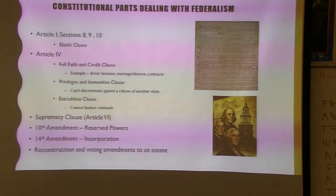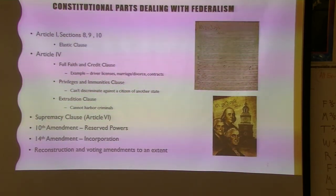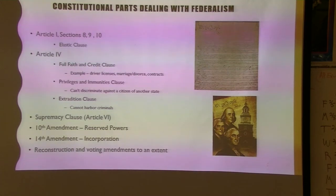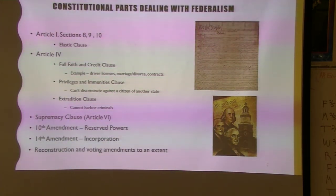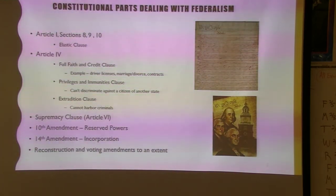The Privileges and Immunities Clause: you cannot discriminate against a person from another state. If a crime is done to you in one state, they can't say 'you're from Arizona, we're not going to pursue this.' Or if you're pulled over for a speeding ticket, they can't charge $180 for someone from Florida but $280 for someone from Georgia — it's got to be the same.